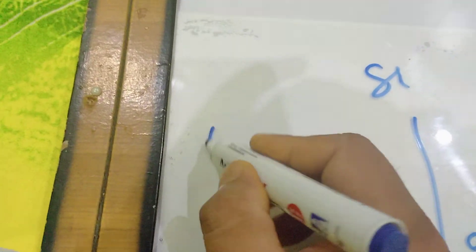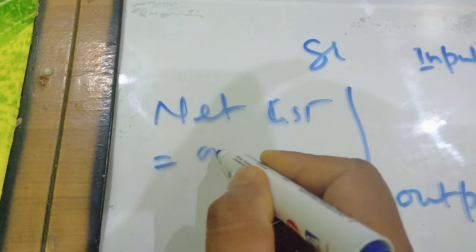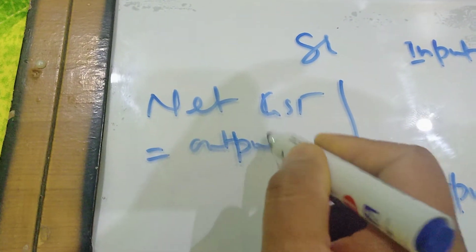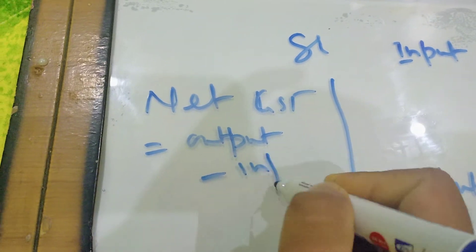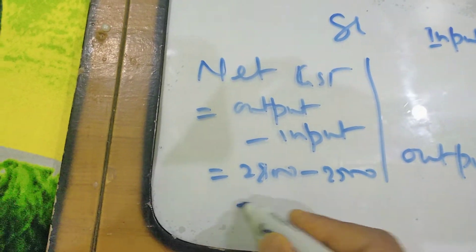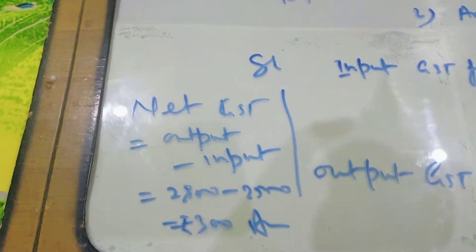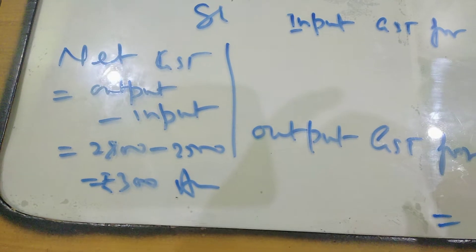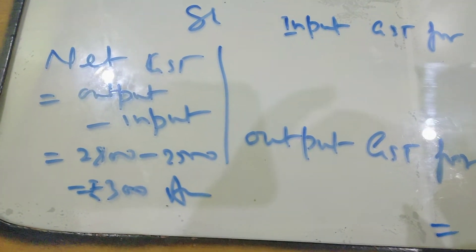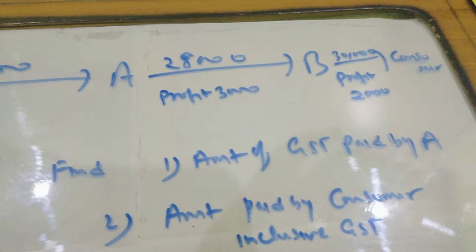Now net GST is basically output minus input. So it is 2,800 minus 2,500, so only 300 rupees he has to pay for GST to the government of India because he made the business. Against his business he has to pay 300 rupees and this is the answer of the first part.